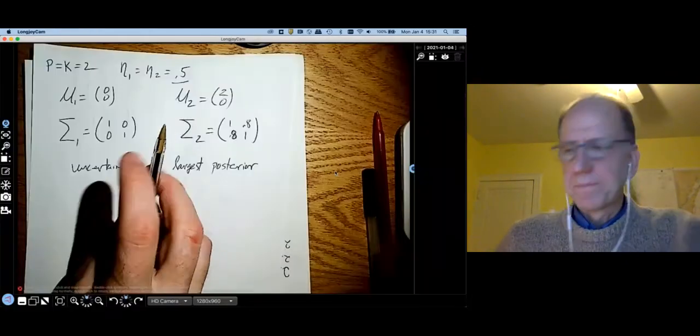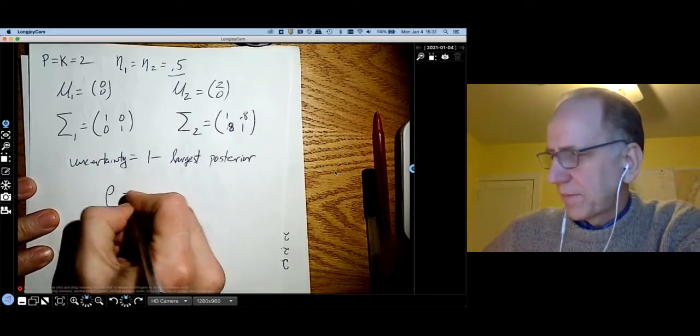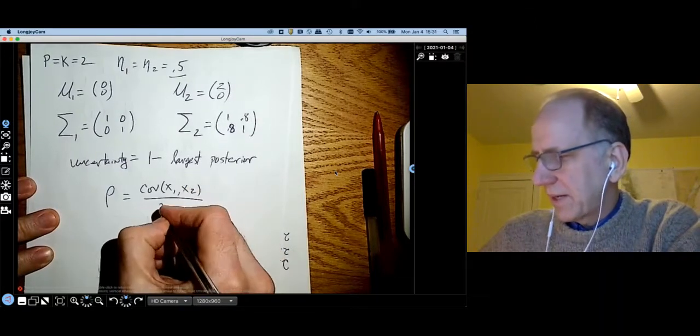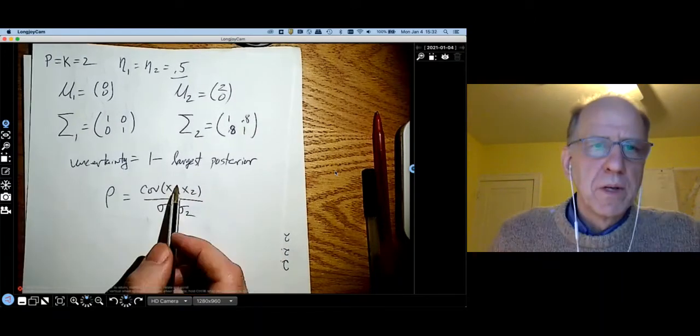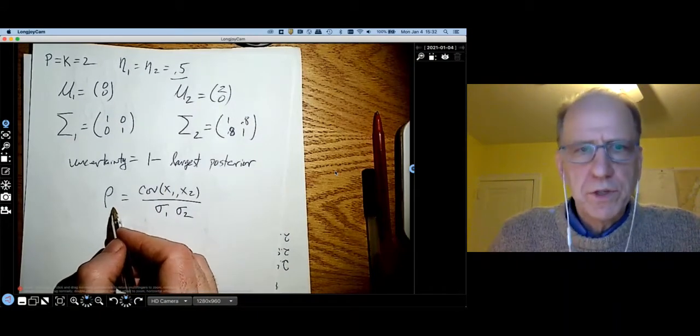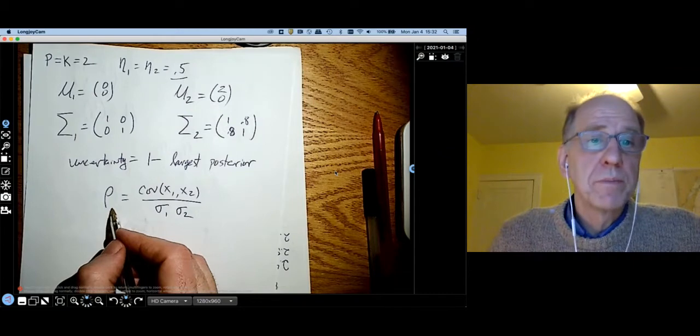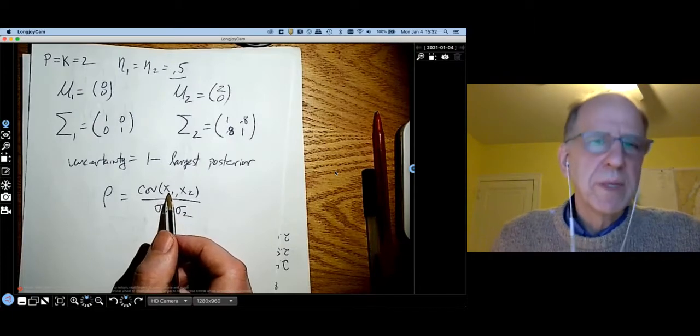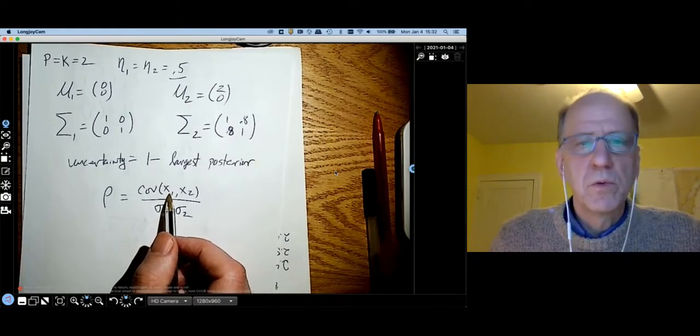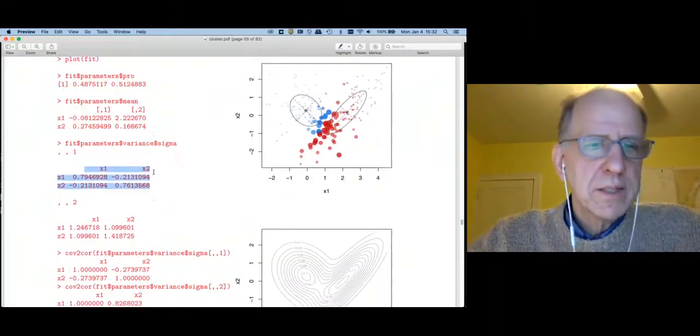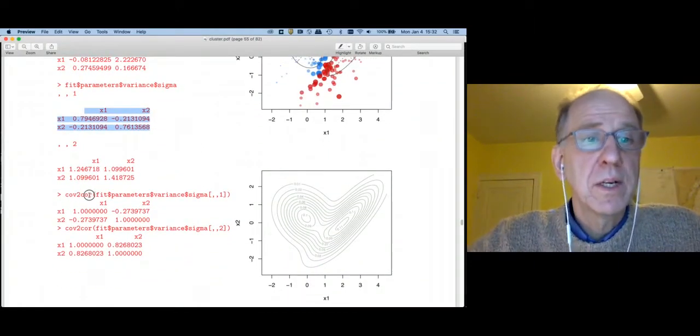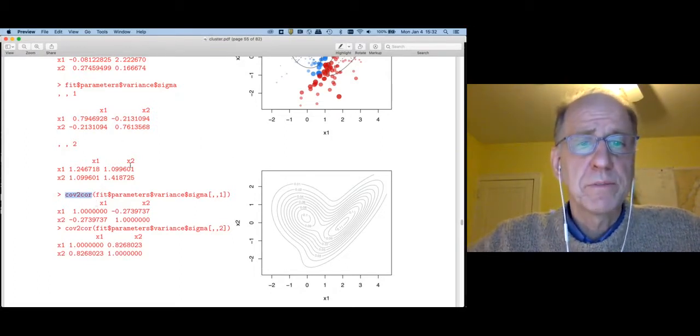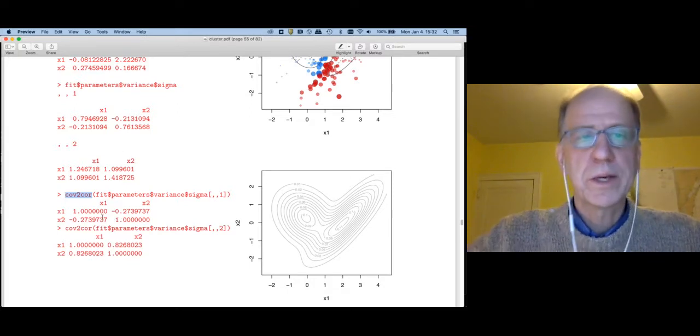Now remember that a correlation coefficient is equal to the covariance between say x1 and x2 divided by sigma 1, sigma 2. So I'd much rather interpret a correlation coefficient because those are bounded between minus 1 and positive 1 than a covariance because I don't really know what big is. It's all relative to the standard deviation. R has a very nice function built in called cov-to-cor.